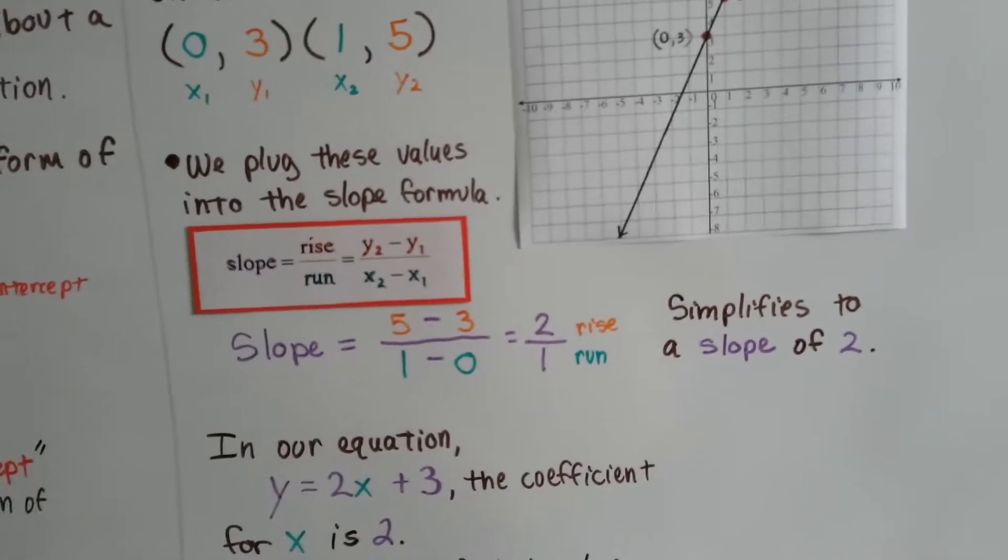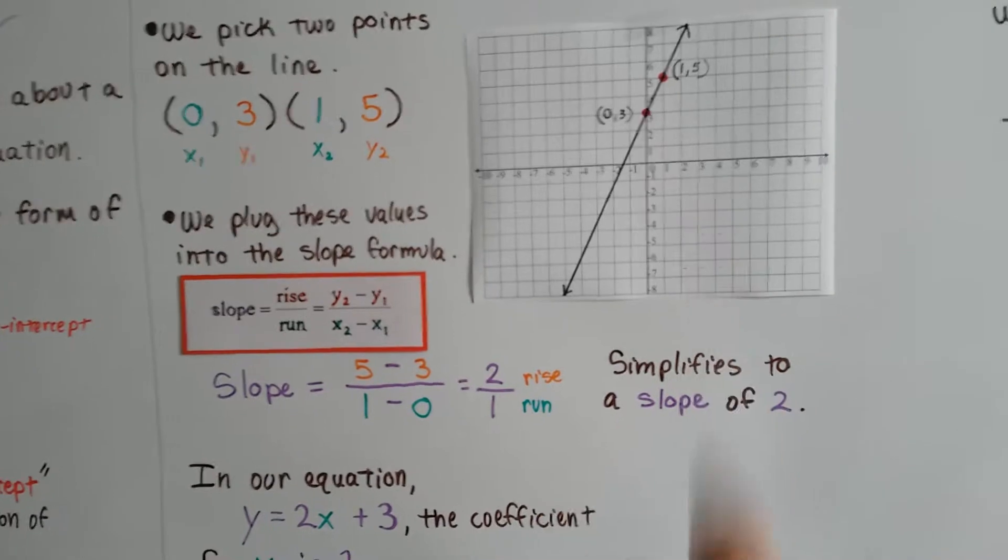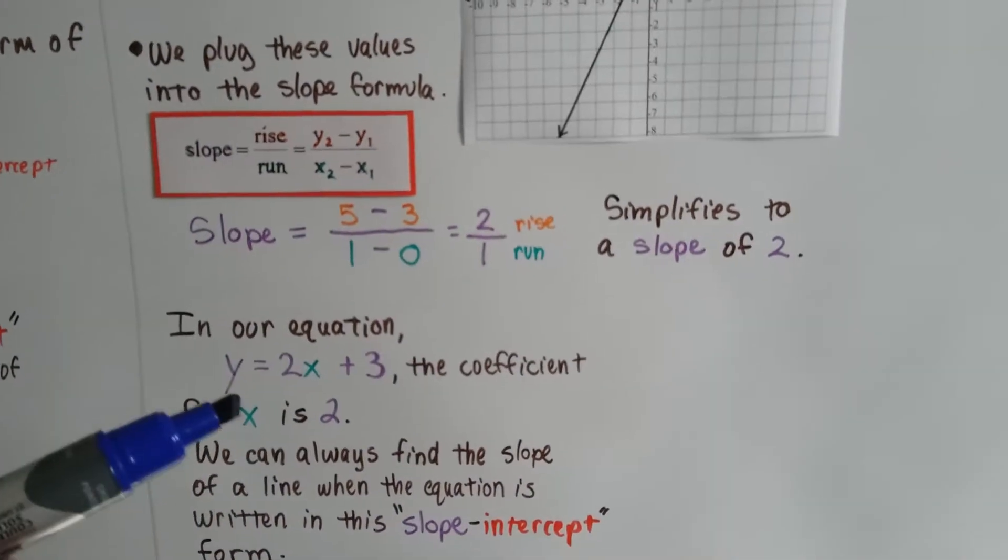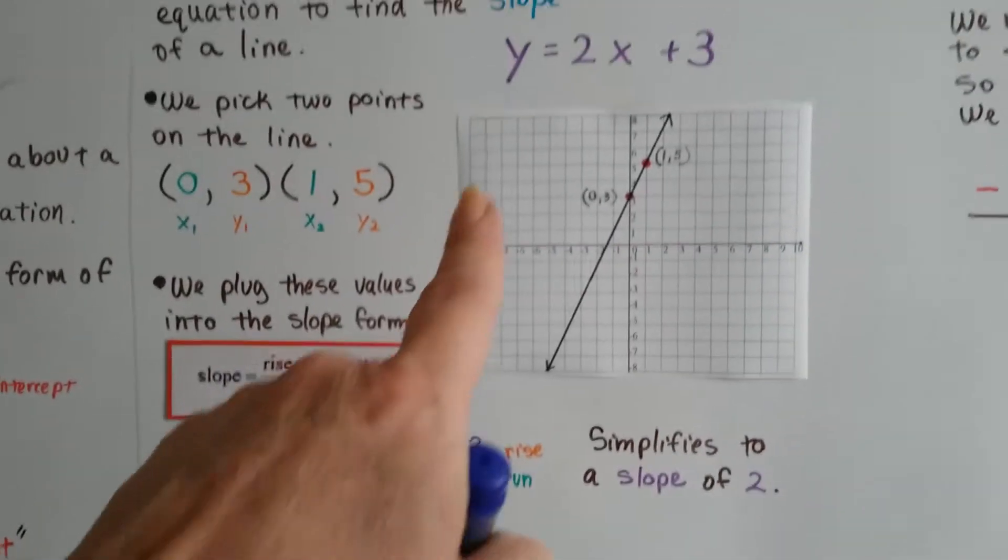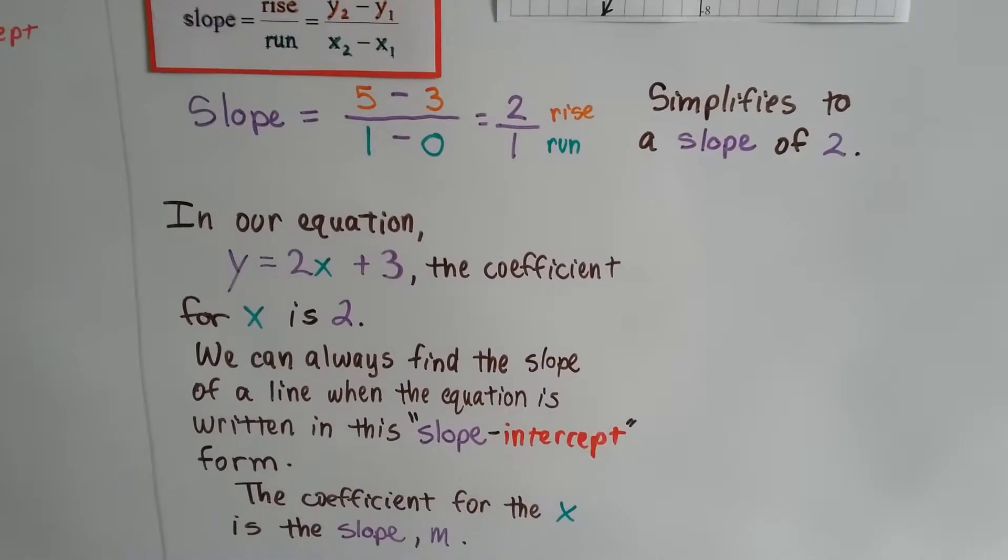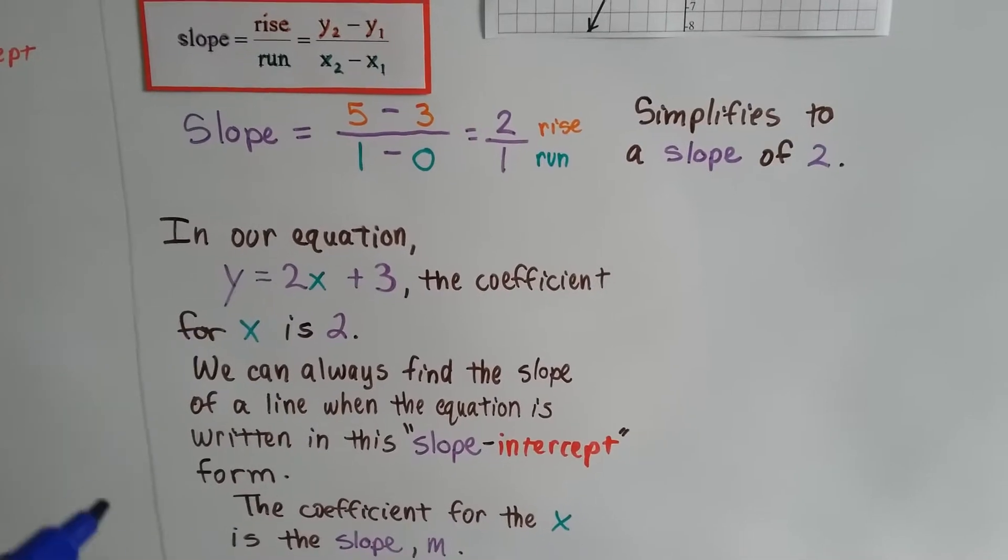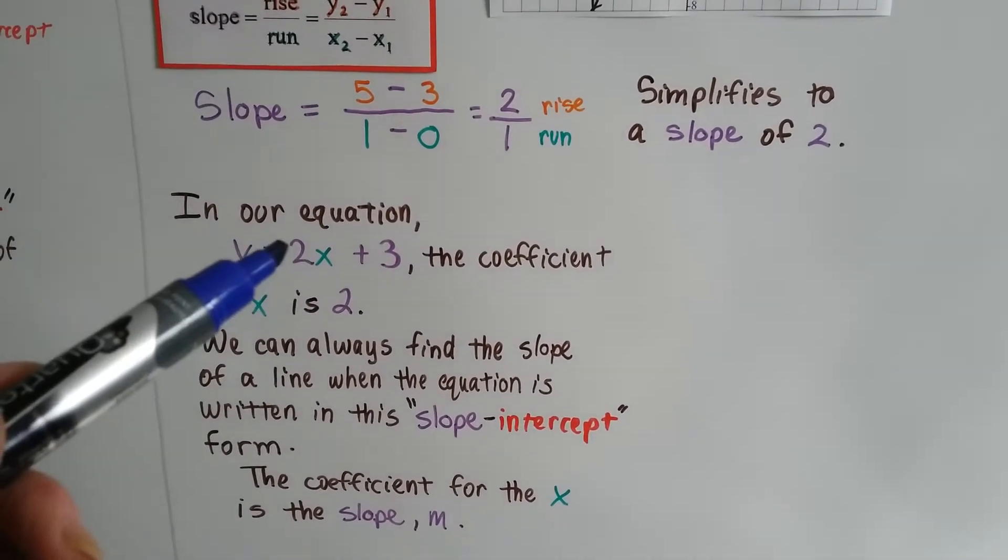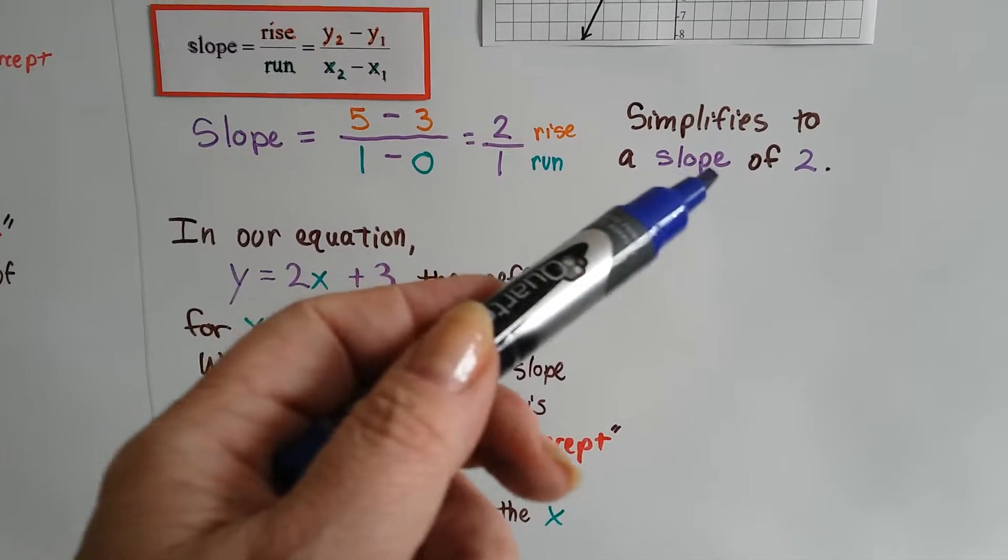So we've got our rise and our run, but we can simplify it to the actual slope. In our equation, the y equals 2x plus 3, that was our equation, the coefficient for x, right here, this 2, that's our slope.